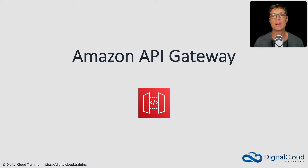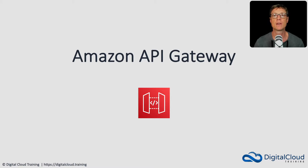Amazon API Gateway is a service that you can use to create application programming interfaces, which are essentially the front door to your business logic or your applications on AWS. API Gateway supports RESTful APIs including REST APIs and HTTP APIs, as well as WebSocket APIs.